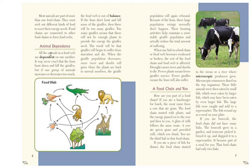Animal dependence. All the animals in a food web are dependent on one another — they need one another. It may seem cruel that lions hunt down and kill giraffes, but if one group of animals increases or decreases too much, the food web is out of balance. Too many giraffes means there will not be enough plants. The giraffes will begin to suffer from starvation and die. When the giraffe population decreases, more trees and shrubs grow, and once plants are back to normal numbers, the giraffe population will rebound. Because of the lions, these large population swings normally don't happen.